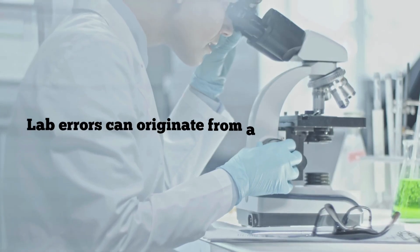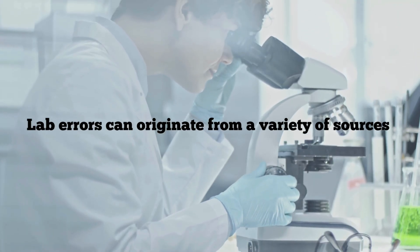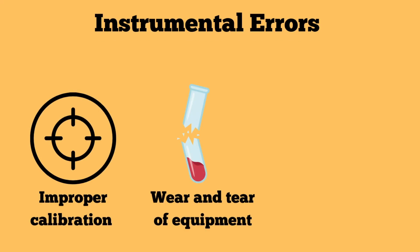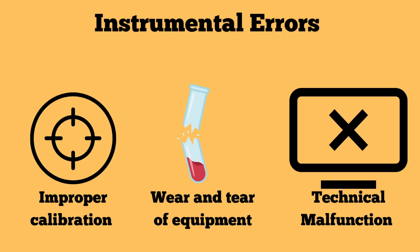Lab errors can originate from various sources, each affecting the outcome in unique ways. Instrumental errors, for instance, include issues such as improper calibration, wear and tear of equipment, or technical malfunctions. These errors can lead to consistently inaccurate measurements.